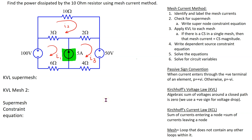In this example we will look at how to deal with a super mesh when solving circuits using the mesh current method. The main steps involved in applying the mesh current method are shown here. In this circuit we have two independent voltage sources and one independent current source. Step one is to identify and label the mesh currents. Recall that a mesh is a loop that does not contain any other loops within it. This circuit has three meshes, labeled i1, i2, and i3.